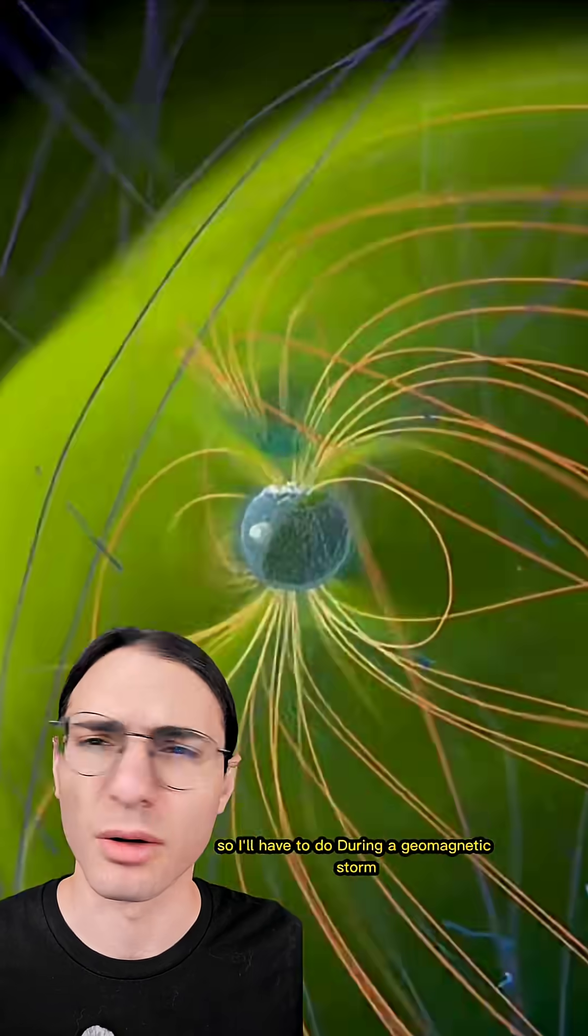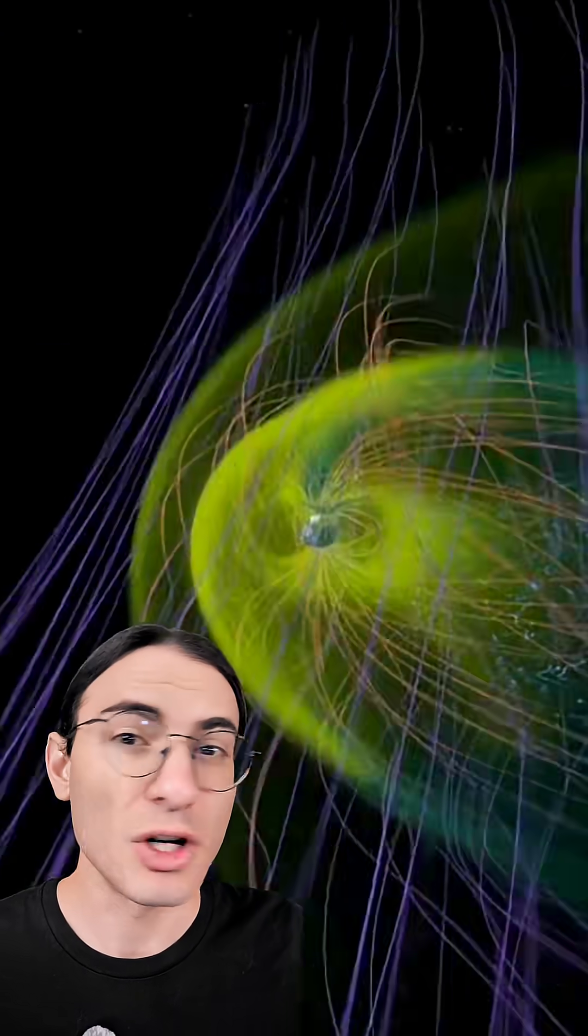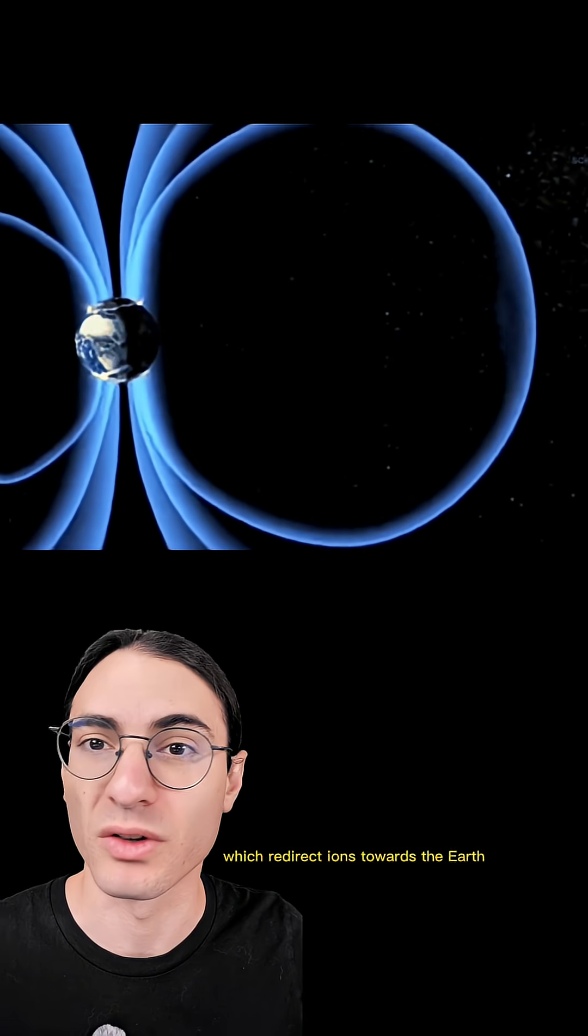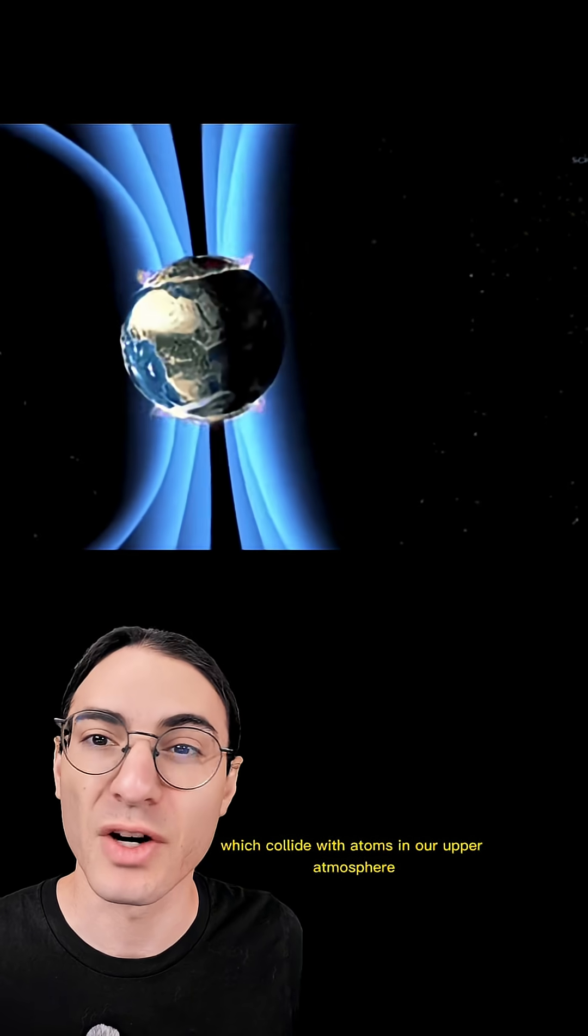During a geomagnetic storm, which are the drivers of auroras, geomagnetic fields and currents are going wild. Magnetic field lines snap, which redirect ions towards the earth which collide with atoms in our upper atmosphere, painting the sky in greens, reds, purples, and blues.